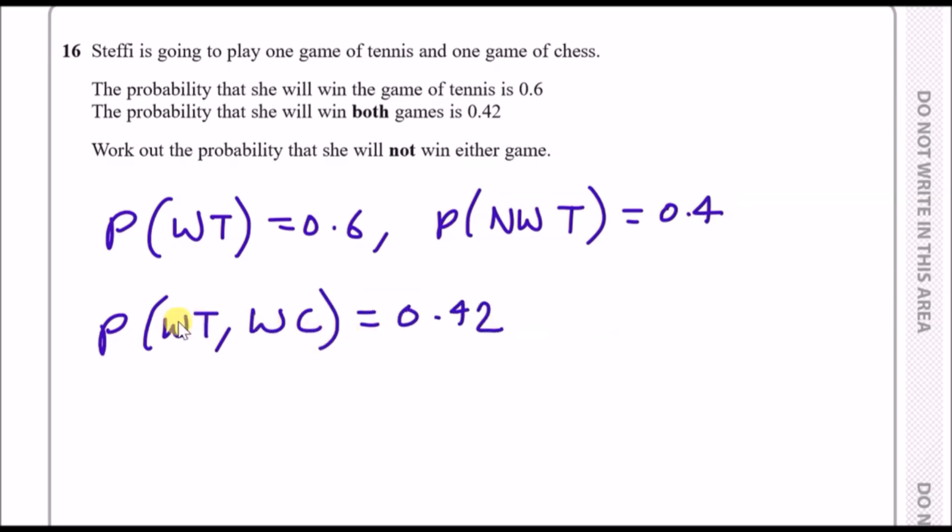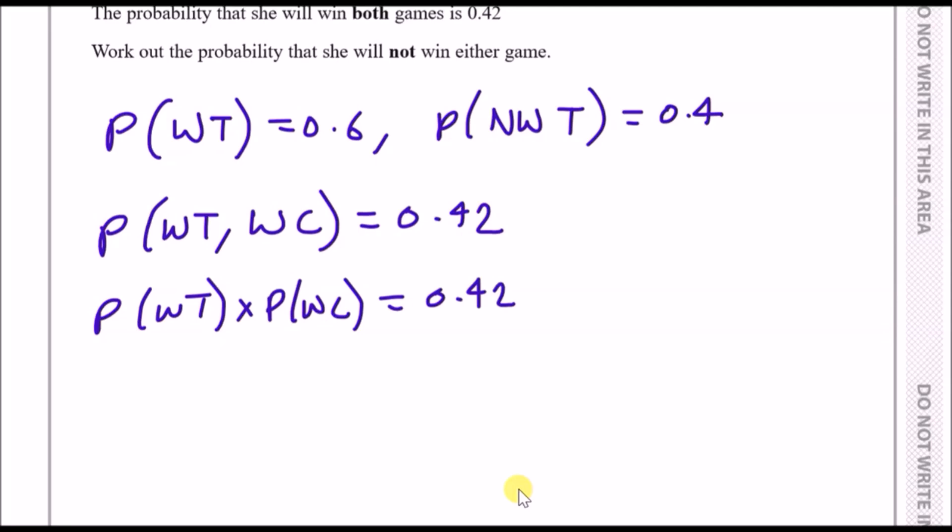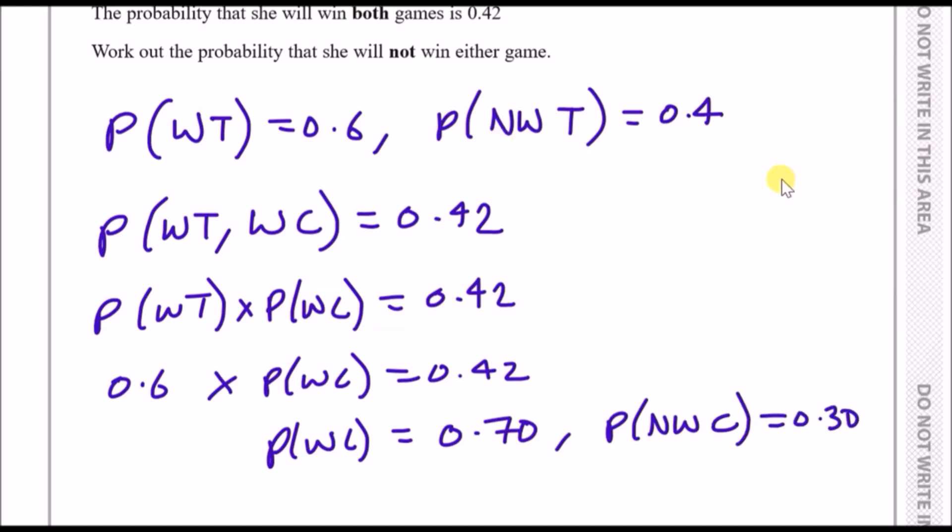We can separate this probability by saying the probability that she wins tennis, then she wins chess, is 0.42. That's 0.6 times P(win chess) equals 0.42. Rearranging to find the probability that she wins chess, if you divide, you'll find that the probability that she wins chess is 0.7. And the probability that she does not win chess is going to be 0.3.